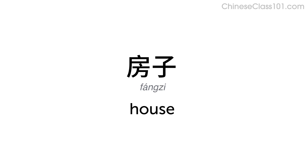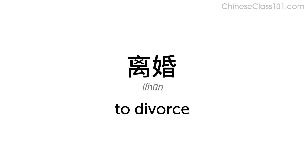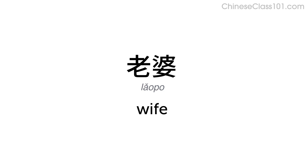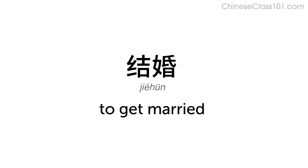房子 — House. 离婚 — To divorce. 老婆 — Wife. 结婚 — To get married.